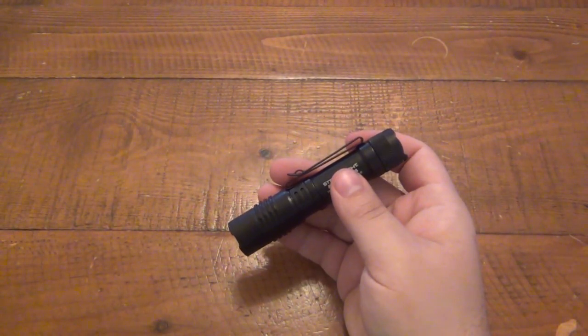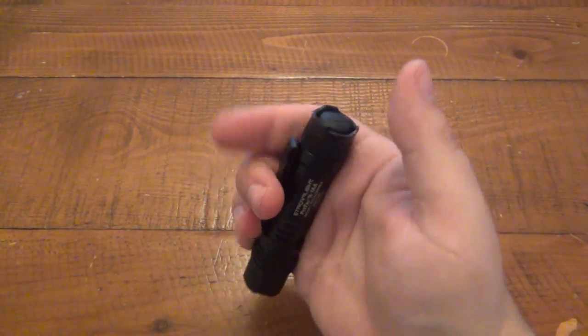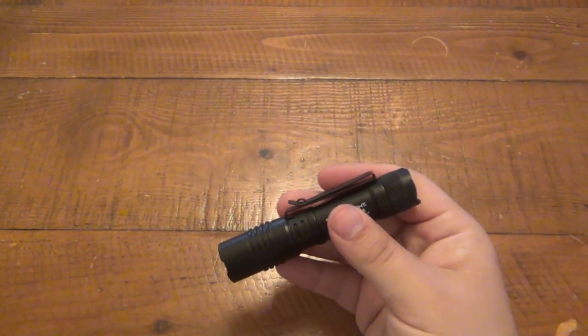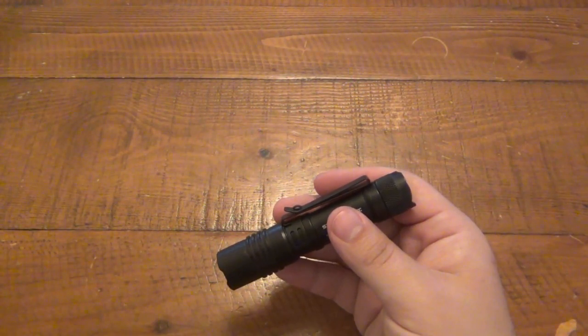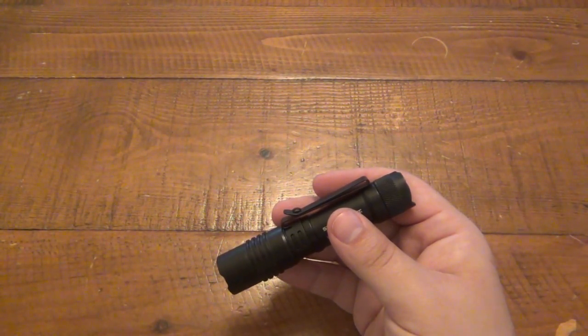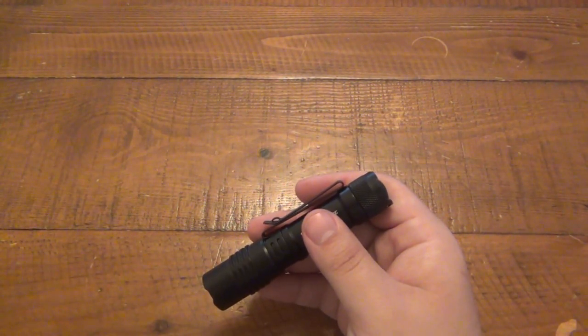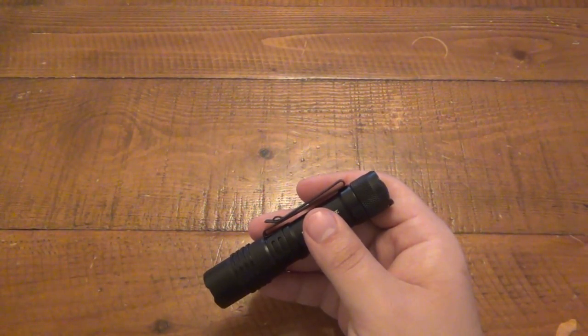Now, if you do this 10-tap thing, which basically you're going to hit it nine times, and on the 10th time, you're going to hold it down, it's going to change it to the second mode. In this case, it's going to be just high. So that's it. When you turn the flashlight on and off, it's only going to have high mode. It basically locks it into a different user interface.